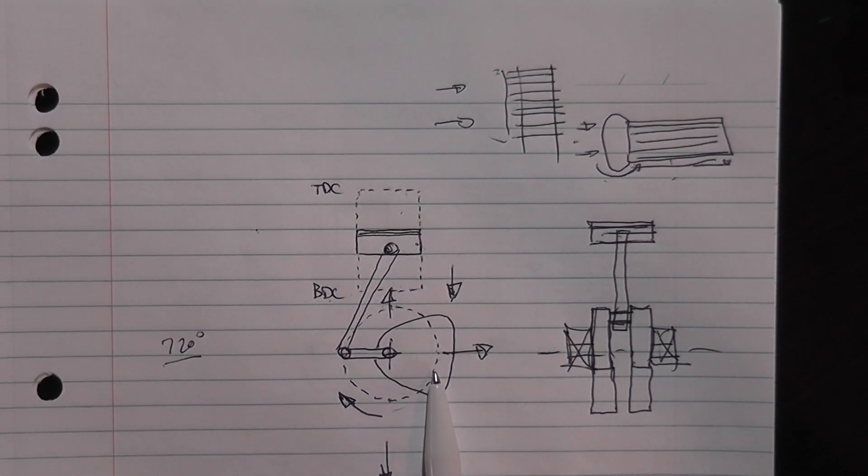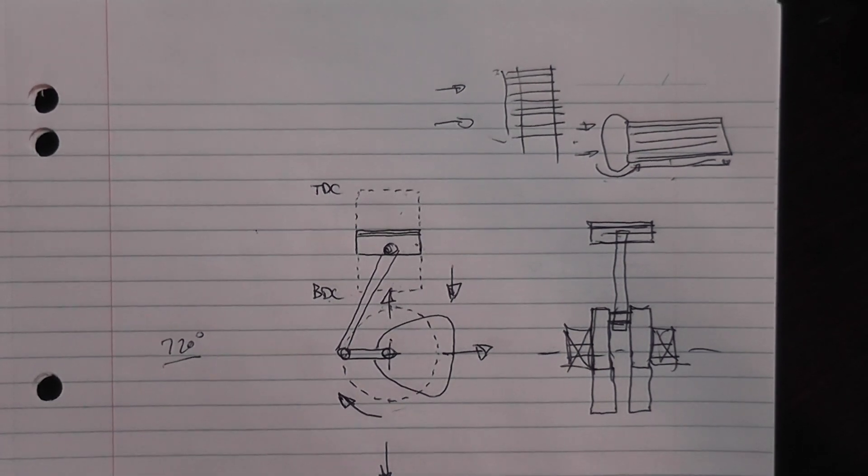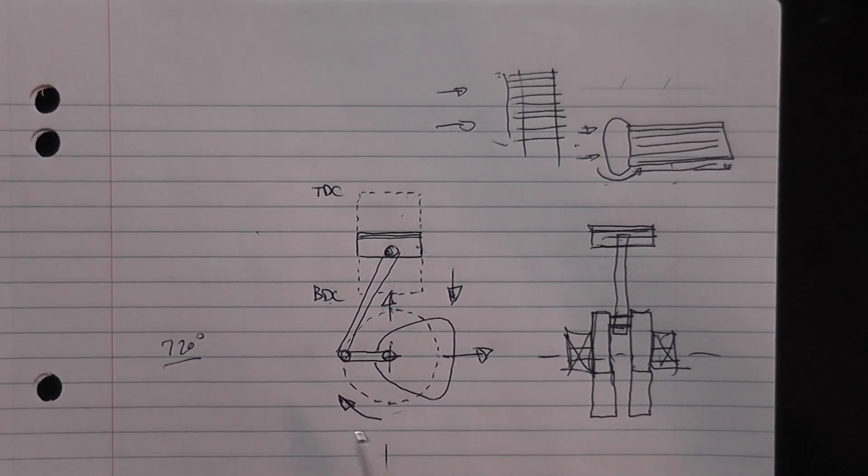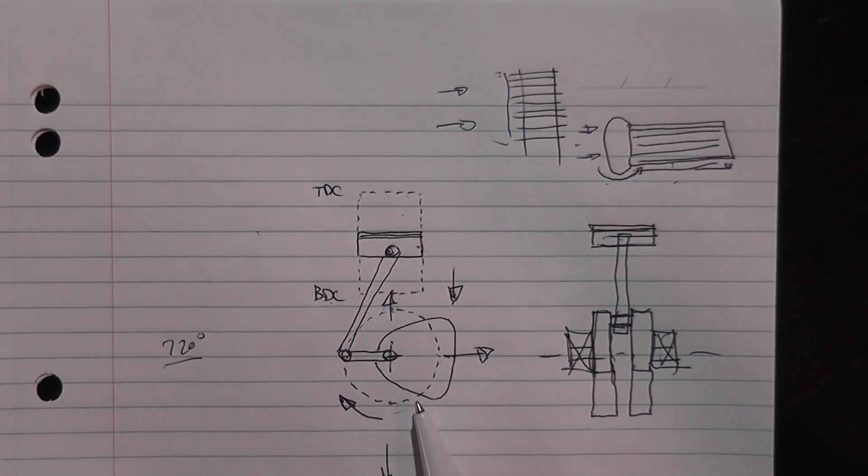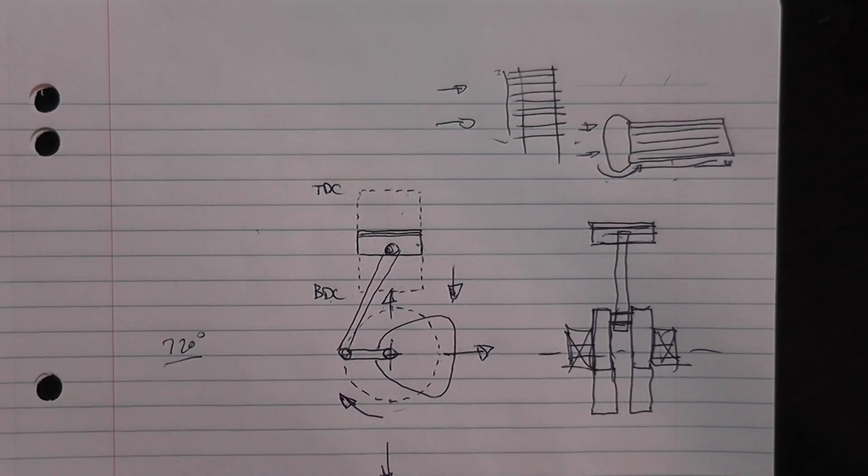Harleys do the same sort of thing. Now they're not a single cylinder but they're a narrow angle V-twin so they tend to work very much like a parallel twin, a 360 degree parallel twin. Both cylinders almost going up and down together and they're very close together too. So I'll get into that in the next video but Harleys are pretty badly balanced and that's why they do that front wheel shaking thing as well.